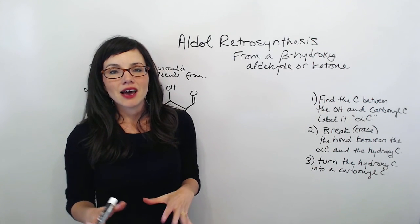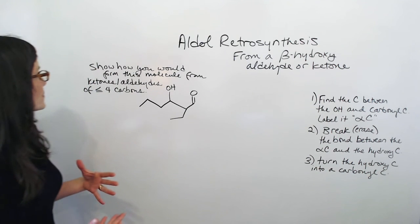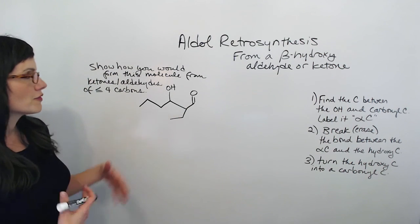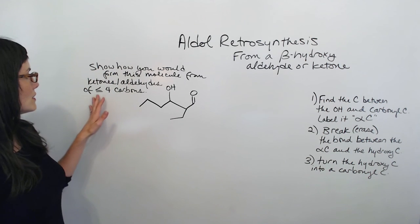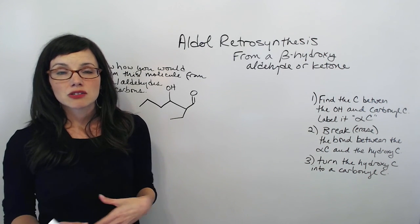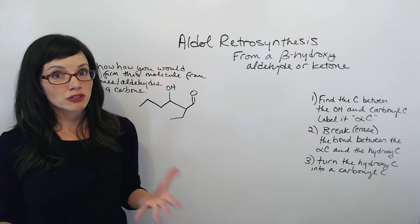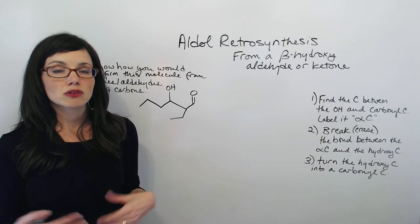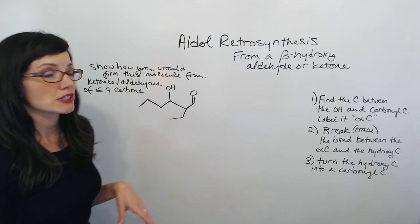A lot of aldol synthesis questions start out like this: show how you would form this molecule from ketones or aldehydes of less than or equal to four carbons. So we're allowed to start with ketones or aldehydes that have four carbons or less. The first thing I would do is count carbons on this molecule.